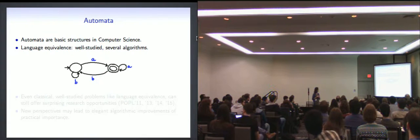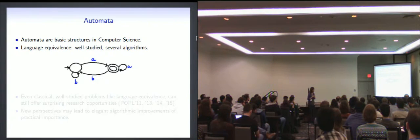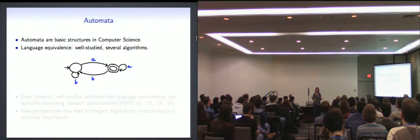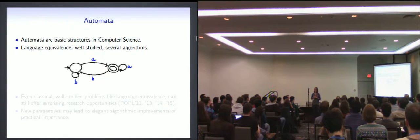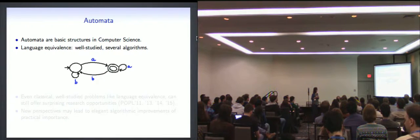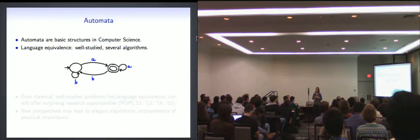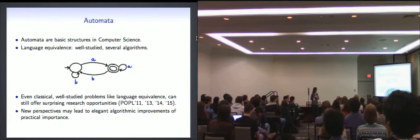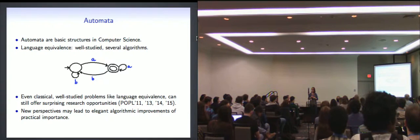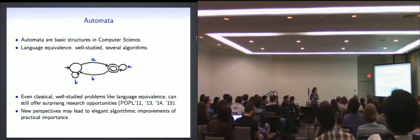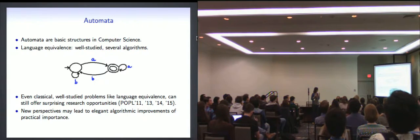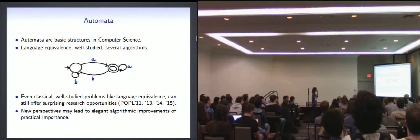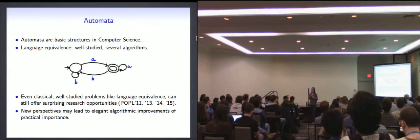So I want to start with telling you a little bit about automata. When I started my PhD, my advisor gave me a book on automata theory. And I looked at it and said to him, hasn't all been discovered about automata? Why do you want me to look at automata? And very quickly I learned that even though automata are such basic structures in computer science, and things like language equivalence and so on has been studied for decades, there's still a lot to be discovered. And if you look at the POPL program from 11, 13, 14, 15, you'll find papers that are still looking at language equivalence for automata, which is surprising. Some things are very simple observations that lead to huge algorithmic improvements. And that makes it a nice data structure to use when you are looking at basic equivalence questions.